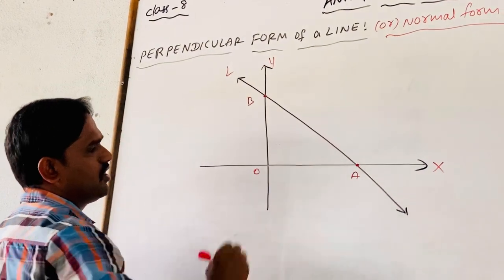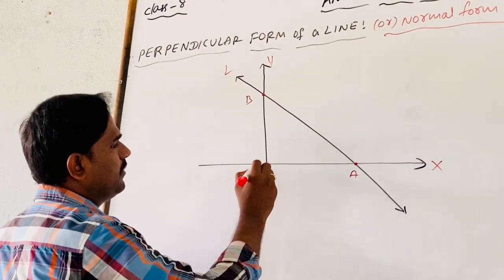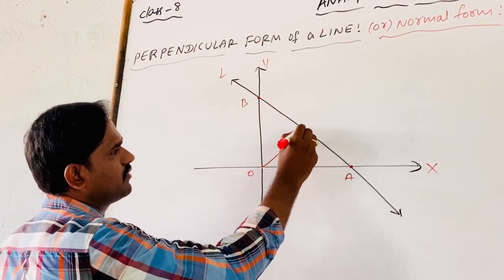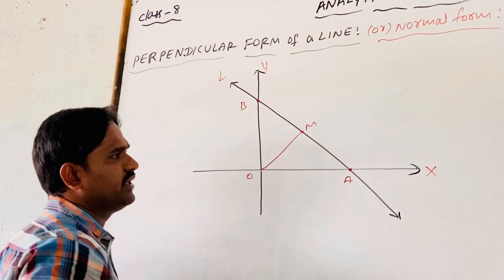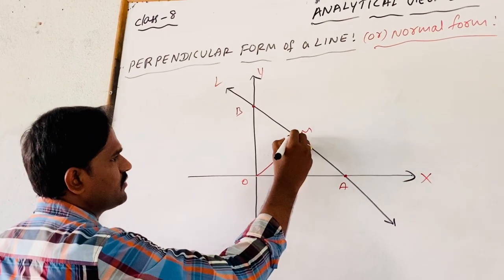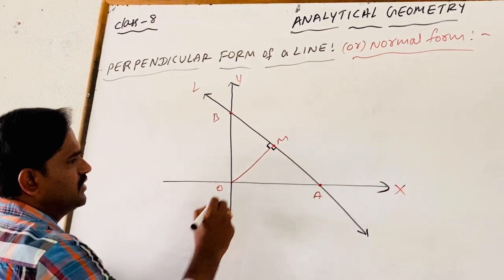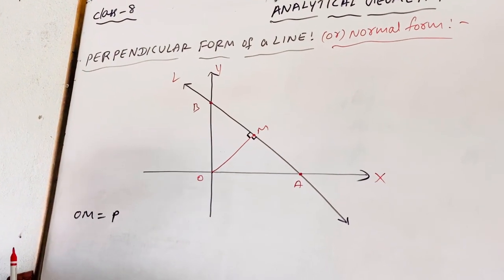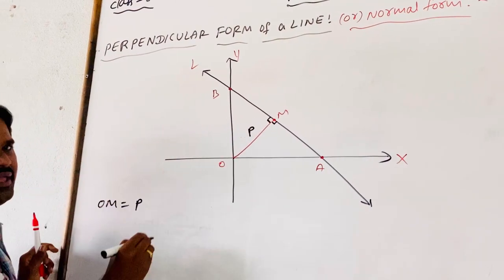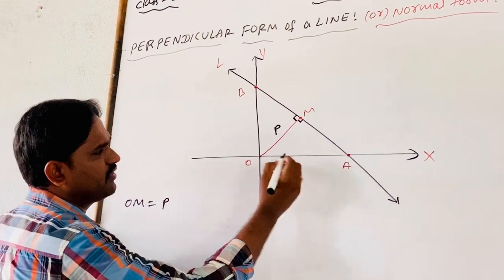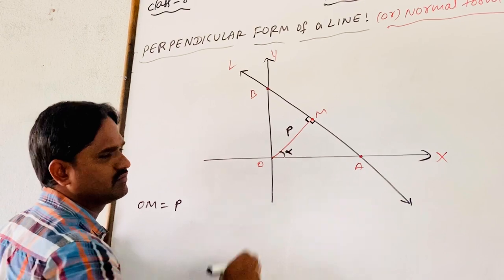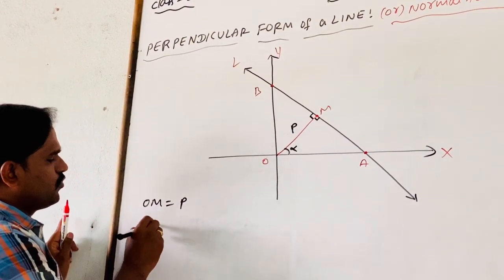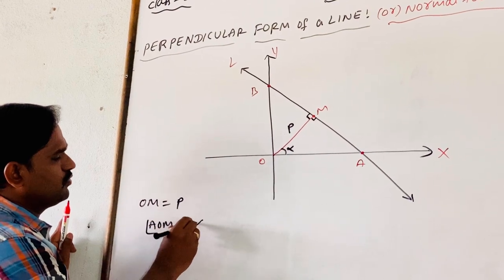The origin is the intersection of the X and Y axes. I am drawing a perpendicular to the line L from the origin, and the foot of the perpendicular is M. Let the length of perpendicular OM equal P, and OM makes an inclination with the positive X axis equal to alpha. So the angle AOM equals alpha.